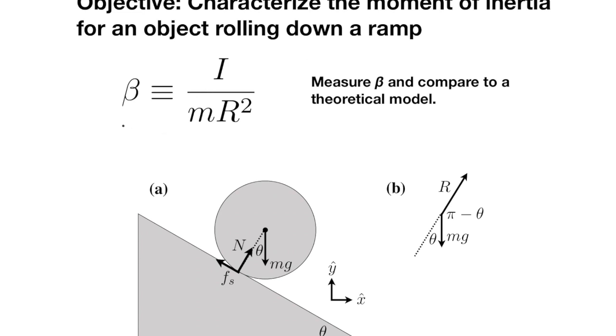In this lab, we're going to be using the constant beta, where beta is representing the moment of inertia, the true moment of inertia, divided by the mass of an object times its radius squared. So beta is just a dimensionless number.